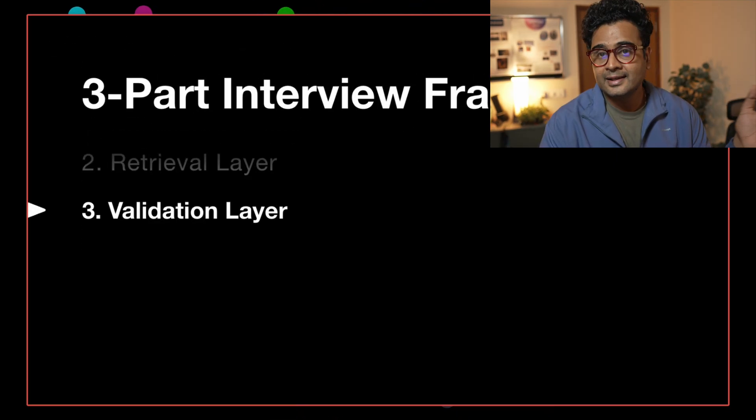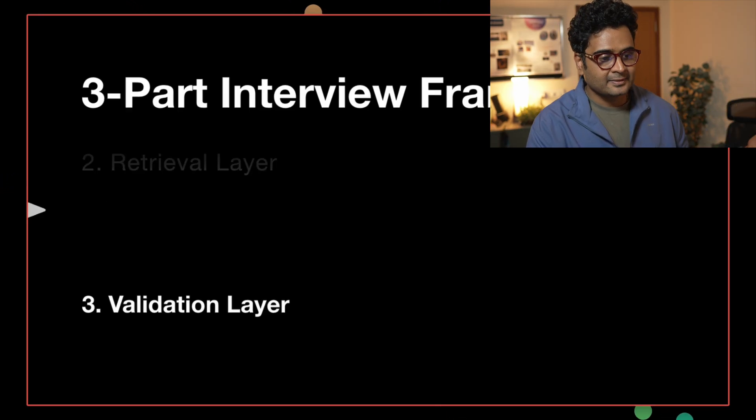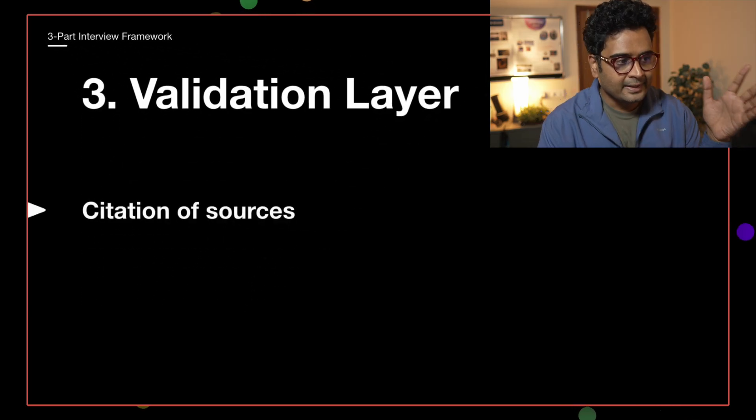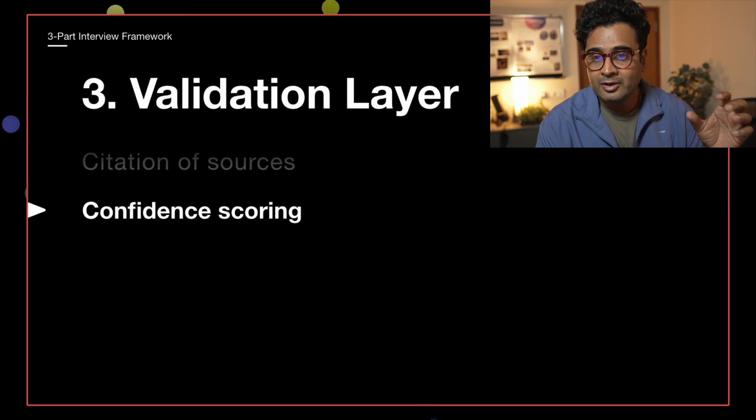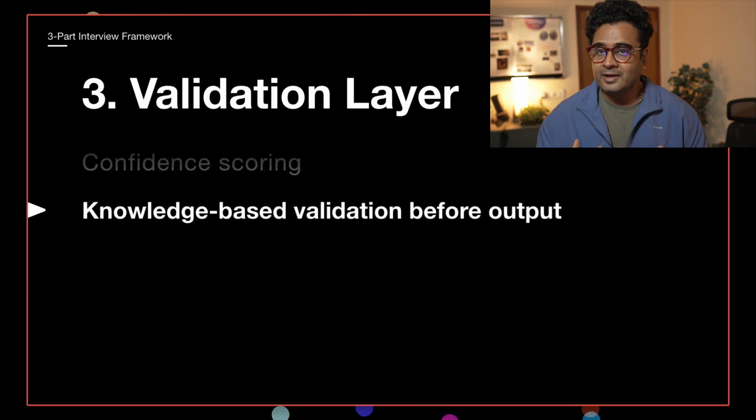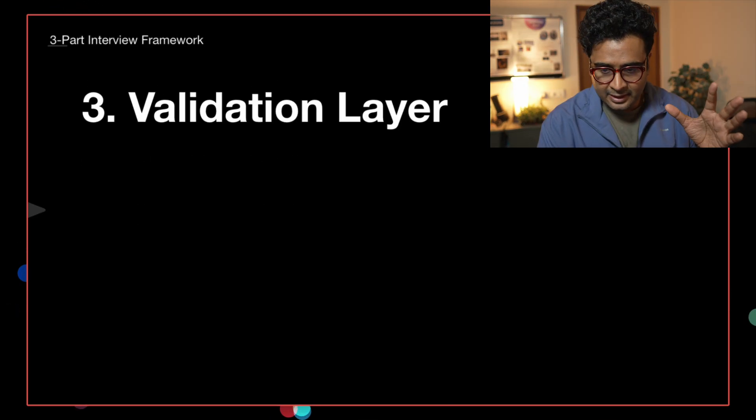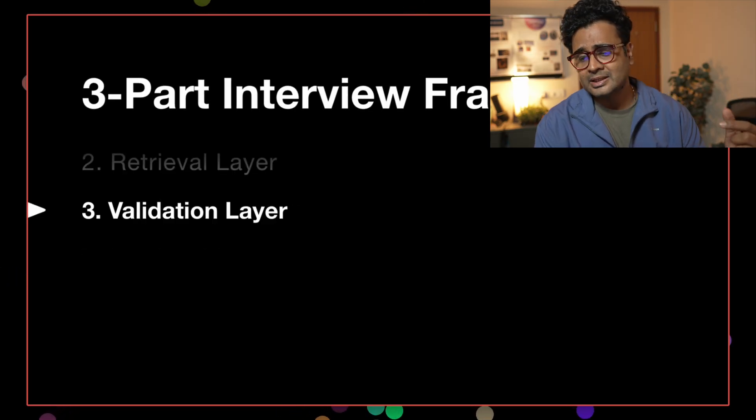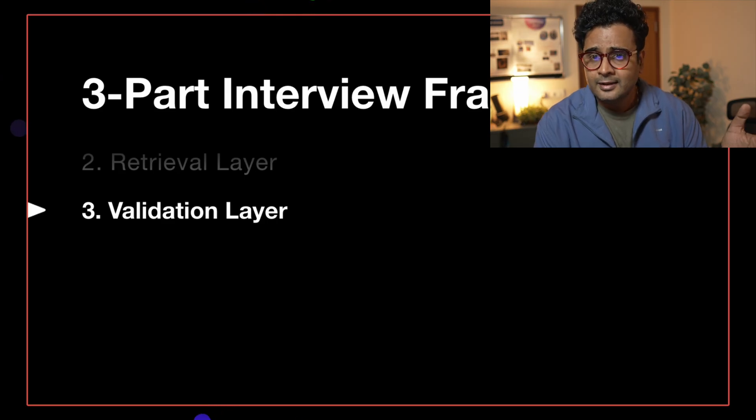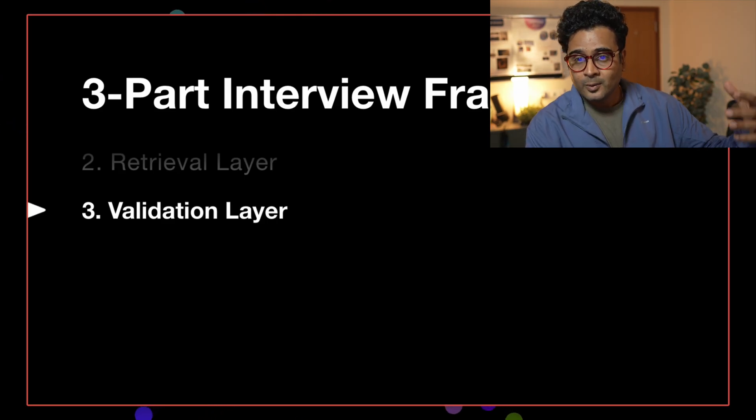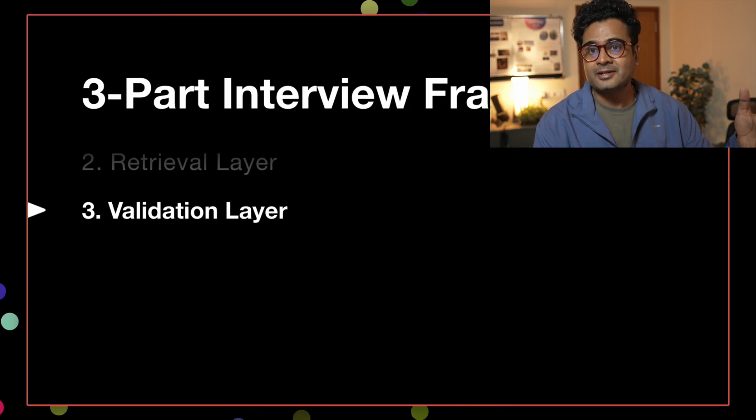Now, the third framework or the third layer is the validation layer. This is where the simple RAG becomes the enterprise RAG. Here, we cite the sources, we score the confidences, and we validate before we generate the final answer. This is called the validation layer. By explaining in terms of this three-part interview framework that there is knowledge layer, retrieval layer, validation layer, first of all, the interviewer will be able to understand that you know the stuff and you're someone who is covering everything at the enterprise level.